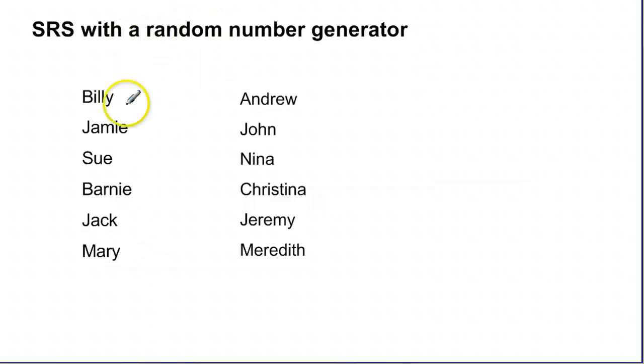So we've got our list of names here. Billy, Jamie, Sue, whatnot. If I give them all a number, starting with one and working my way down, I can have a computer generate random numbers for me within a certain range. So I pull out my calculator. And I'll show you how to do this on the TIs very quickly here.